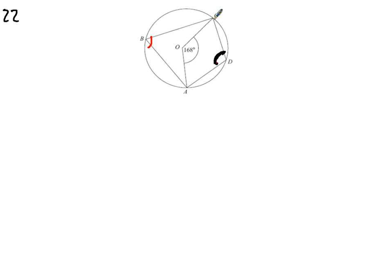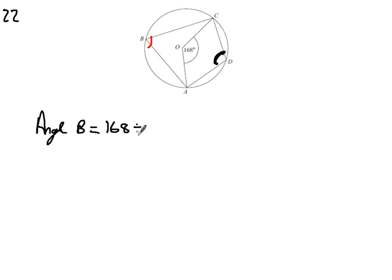The angle subtended to the centre — if you've got an arrow happening here at angle B — will be half the amount of what it subtended to the centre. So here's the centre and here's the angle on the outside. If we halve 168, that gives us 84 degrees, so B = 84 degrees.